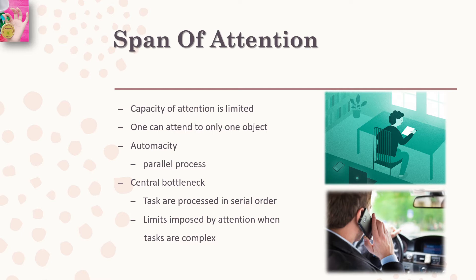An important question arises as to what number of objects can simultaneously exist in the focus. This question has been subjected to extensive experimental research, and the studies have revealed that the capacity of attention is limited. In a single act of attention, one can attend to only one object. Therefore, different tasks requiring attentional resources cannot be carried out simultaneously. In situations requiring attention on two different sets of tasks, attention follows the principle of serial processing — attending to one set of input and then to another.